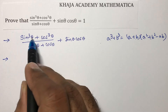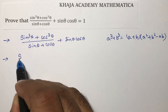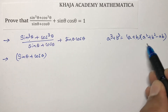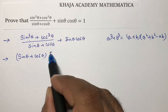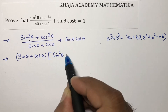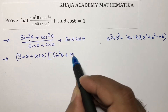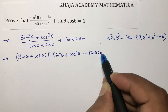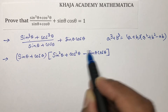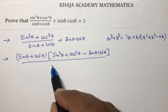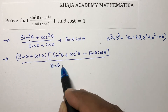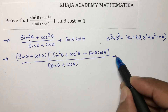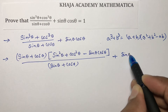So if we apply this, a is sinθ and b is cosθ. So we get (sinθ + cosθ) into (sin²θ + cos²θ - sinθ cosθ), all divided by sinθ + cosθ, plus sinθ cosθ.